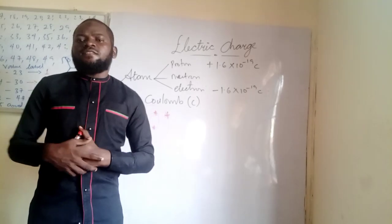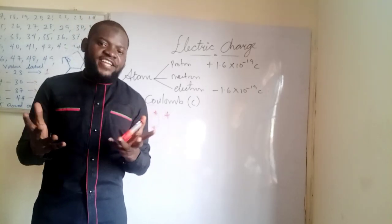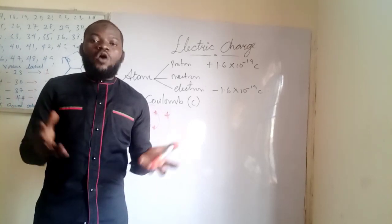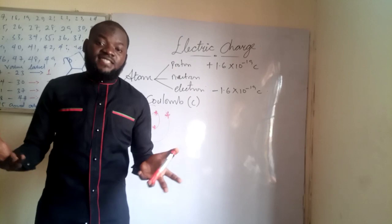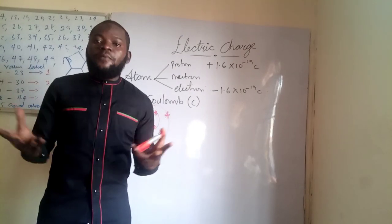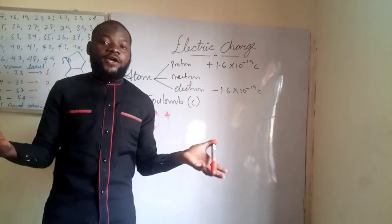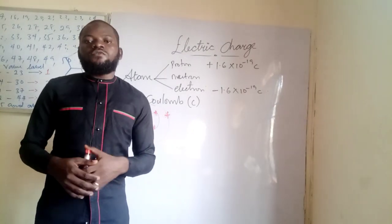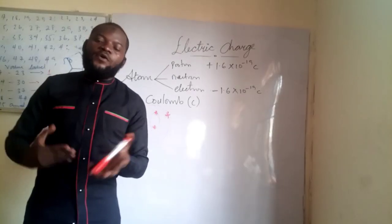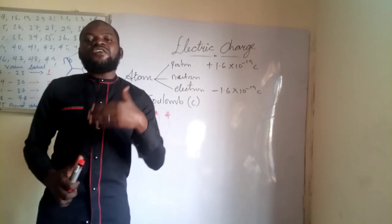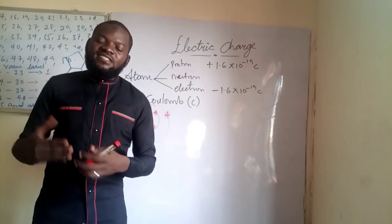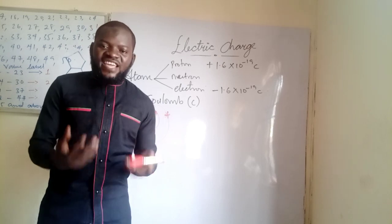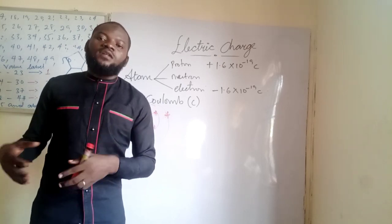This leads us to understand that, just like energy in the universe can be transferred from one point to another but remains the same — the algebraic sum of energy in the universe equals zero — likewise for charge. Charge can move from one point to another, but it cannot be created and it cannot be destroyed.